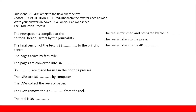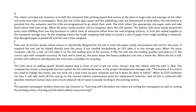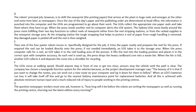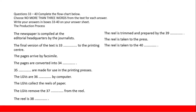The reel is then weighed. 'The reel is trimmed and prepared by whom?' One of the four paster robots moves in, trims the paper neatly, and prepares the reel for the press. So the answer is 'paster robots.' 'The reel is taken to the press.' The LGVs either load it directly onto the press or keep it in the storage area — they have been programmed to do so. For True/False/Not Given, look for synonyms. For sentence completion, look for keywords.